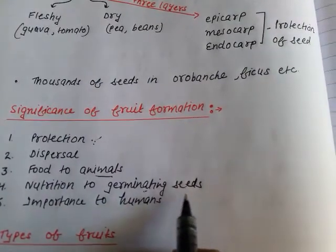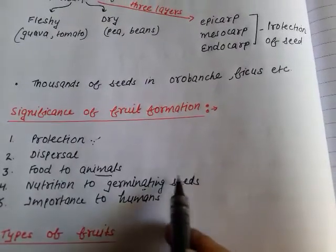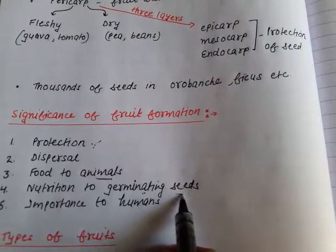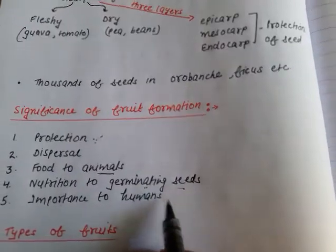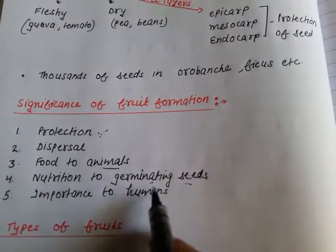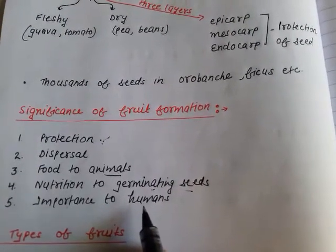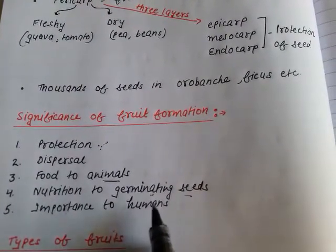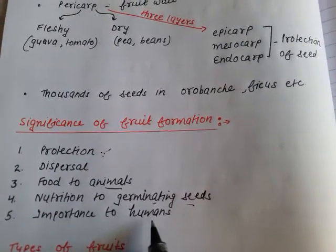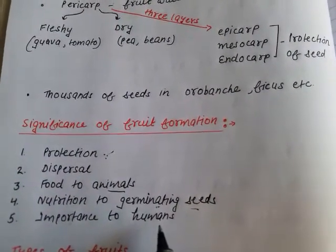Because if you grow seeds, the fruit will also provide nourishment to the seedlings. The last importance is to humans — obviously, fruits are consumed by humans and are a source of food, protein, oil, vitamins, minerals, and sugars. So this was about the importance of fruit formation.